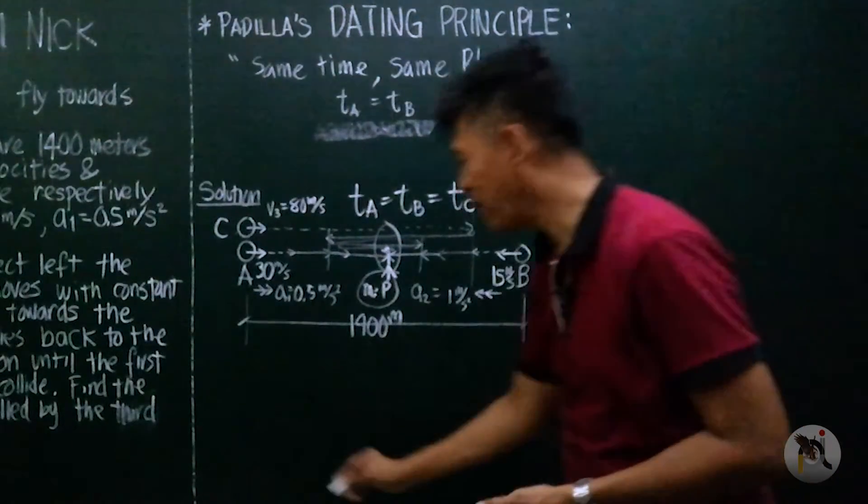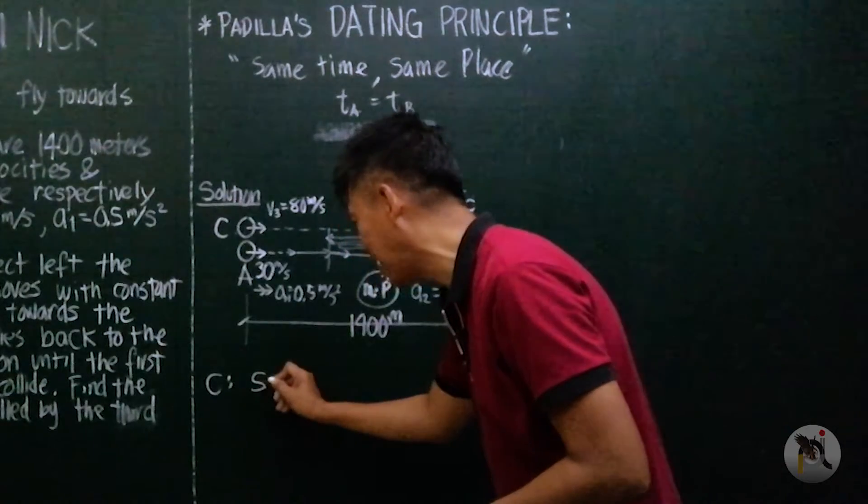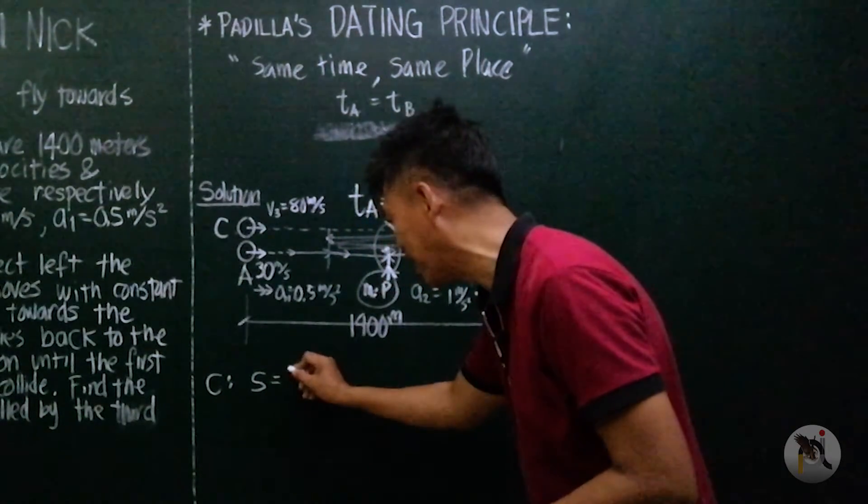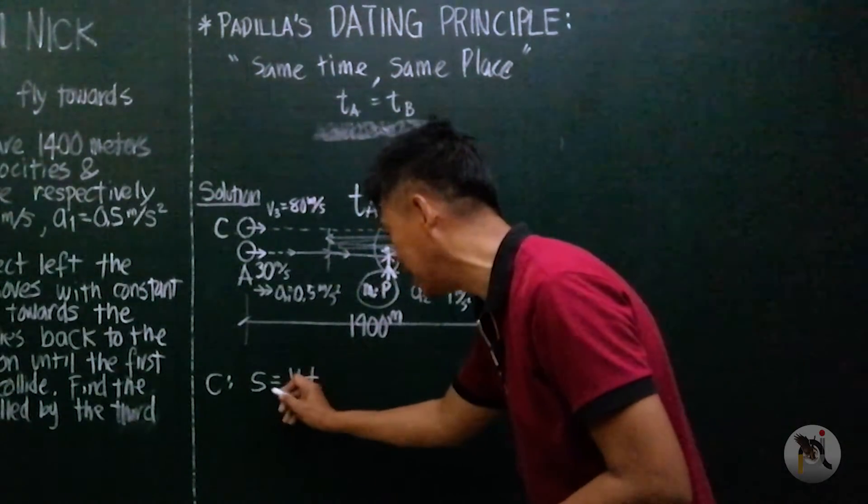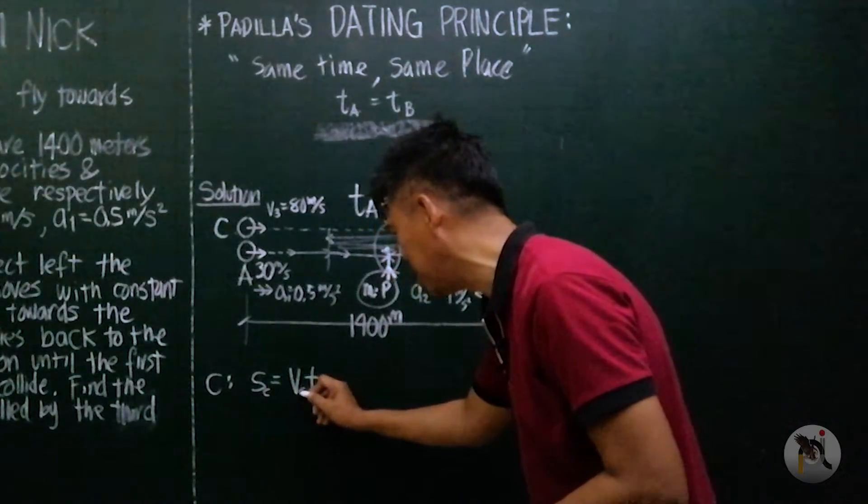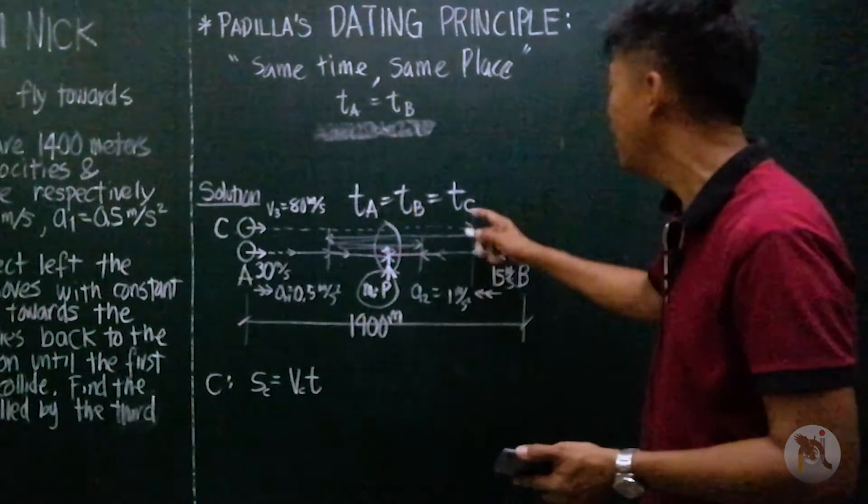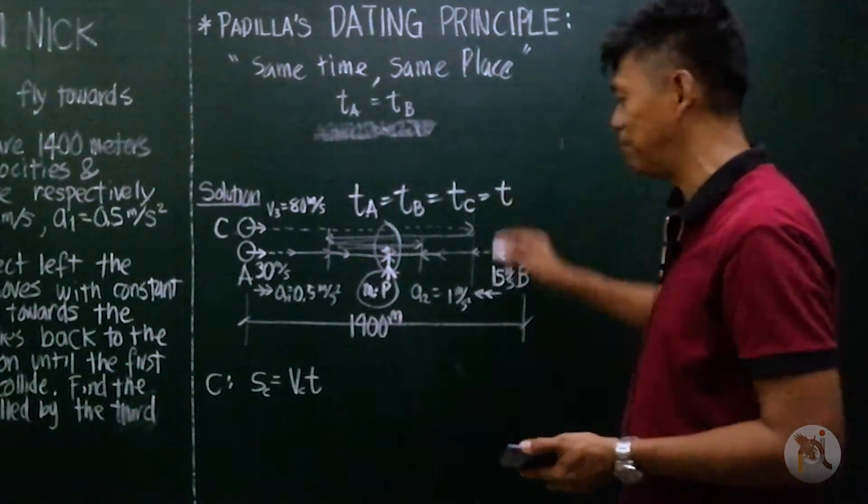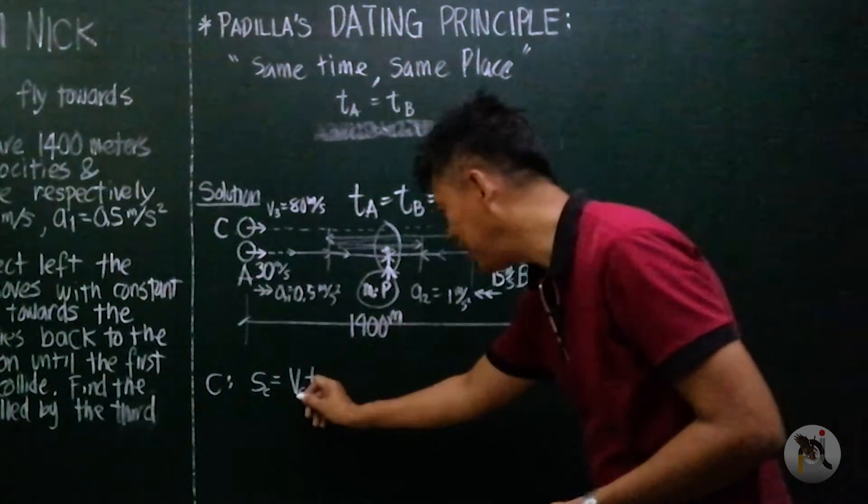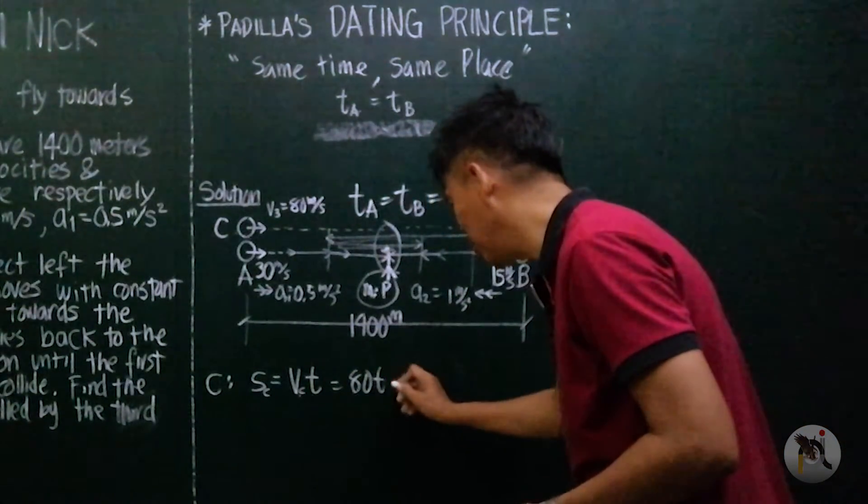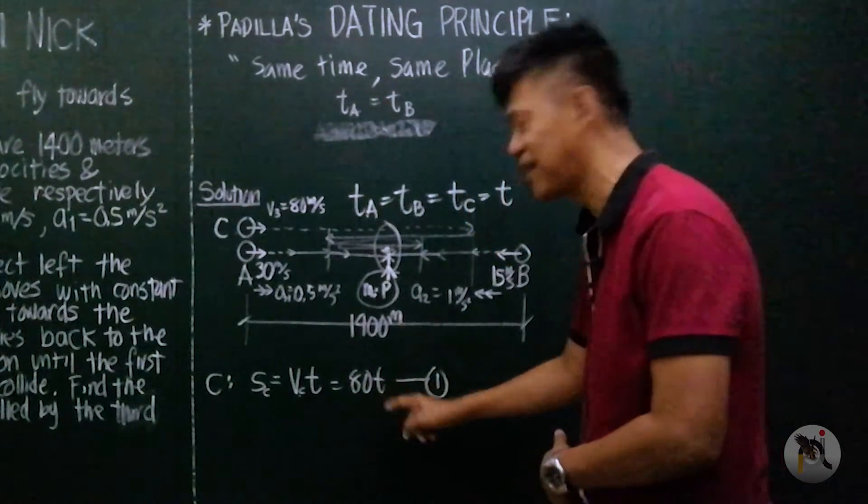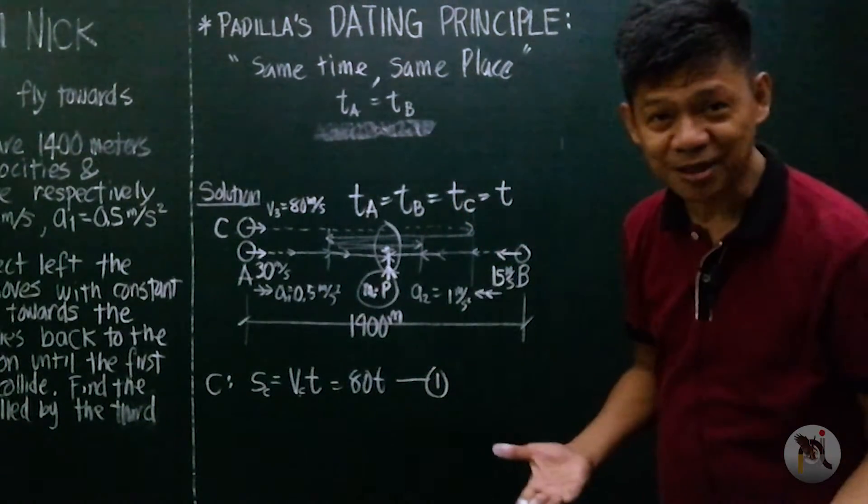So as far as object C is concerned, using the constant velocity formula S is VT, S_C is V_C times T_C, which let me just call time T. So V_C is 80. All we need to do is find the time. How can we have the time?